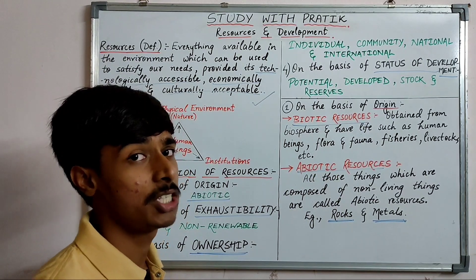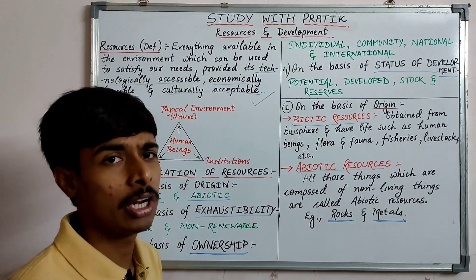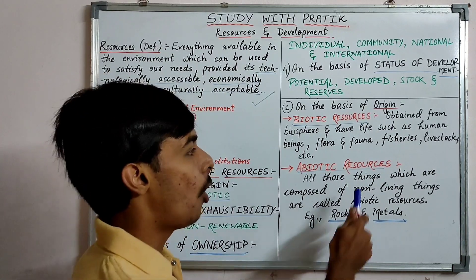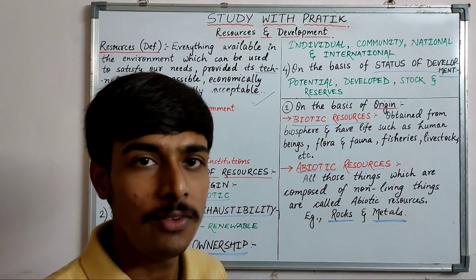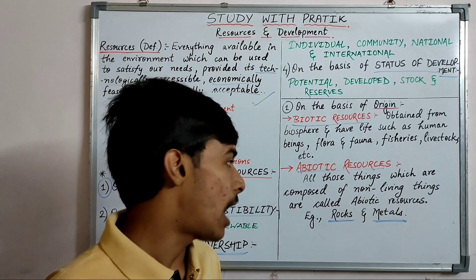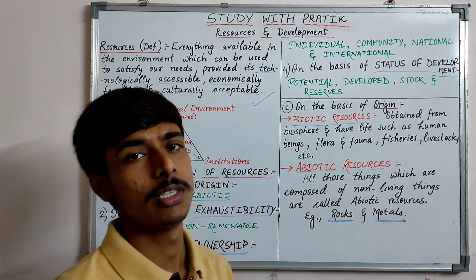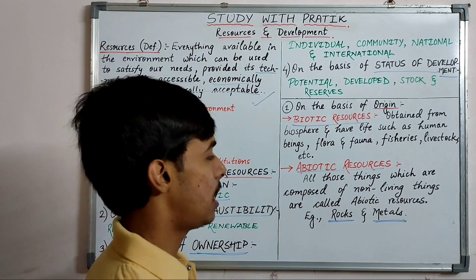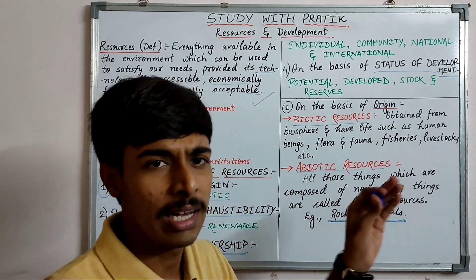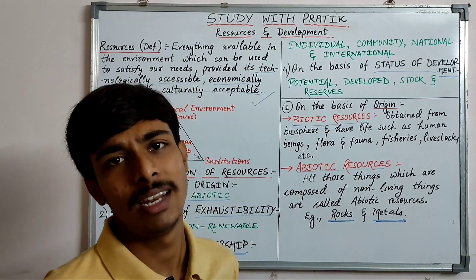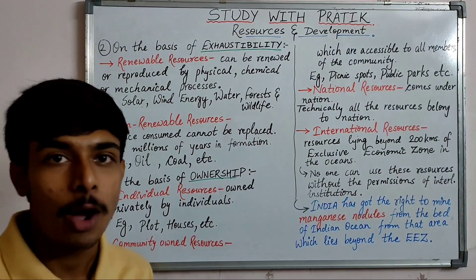Abiotic resources — 'ajaev sansajan' — come from non-living things. All those things which are composed of non-living things are called abiotic resources. Examples given here include rocks and metals, and you can list many other examples.